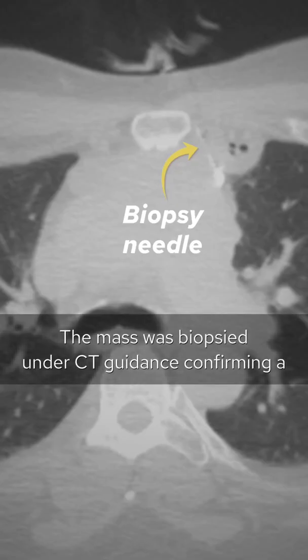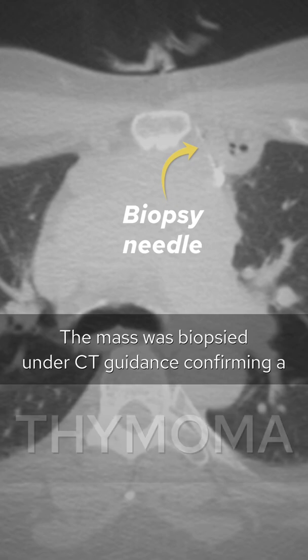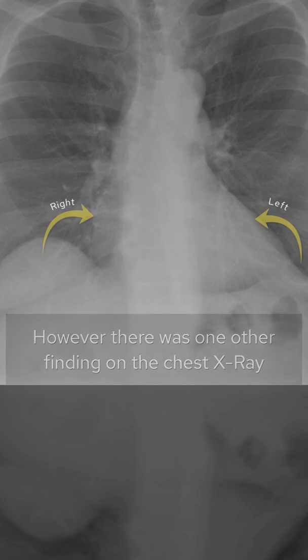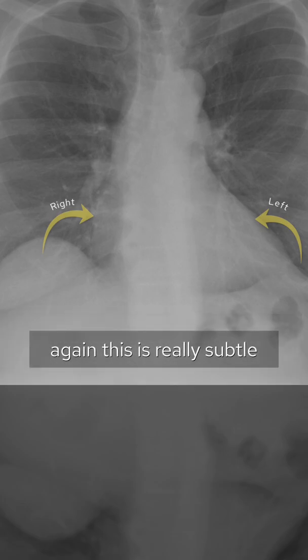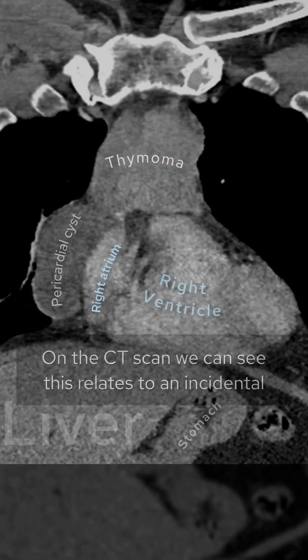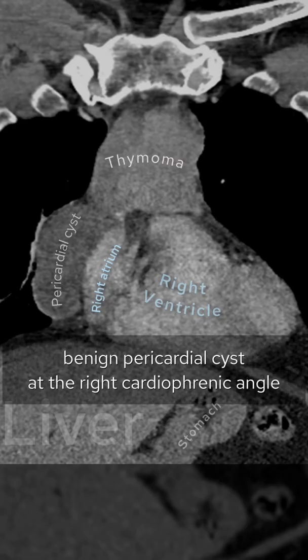The mass was biopsied under CT guidance, confirming a thymoma. However, there was one other finding on the chest x-ray — again, this is really subtle. The right side of the heart is less dense than the left. On the CT scan we can see this relates to an incidental benign pericardial cyst at the right cardiophrenic angle.